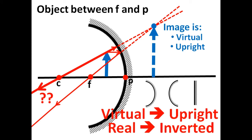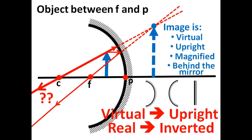As for the size of the image, the image is magnified because it is bigger than the object. And it is formed behind the mirror.